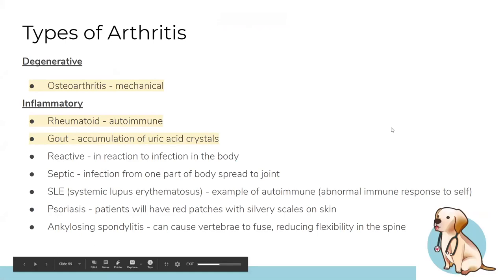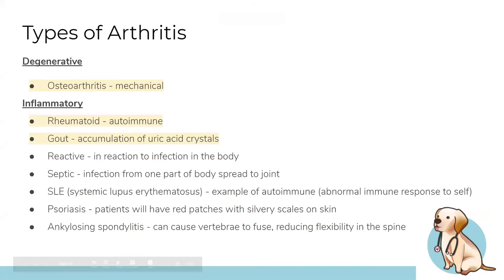There are two types of arthritis: degenerative and inflammatory. Degenerative is osteoarthritis — mechanical, wear and tear. Inflammatory types include rheumatoid (autoimmune), gout (uric acid crystal accumulation), reactive arthritis (following infection), septic arthritis (infection spreading to joint), SLE, psoriatic arthritis, and ankylosing spondylitis, which causes vertebrae to fuse and reduces spinal flexibility.